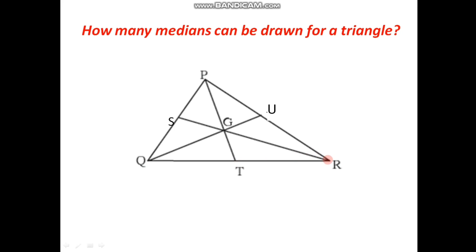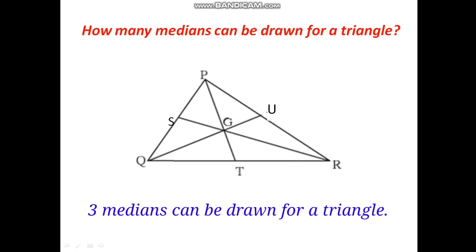Similarly, from vertex R we have the median RS, and from vertex Q we have the median QU. So, as there are three vertices for a triangle and three sides of a triangle, there are three medians which can be drawn for a triangle.